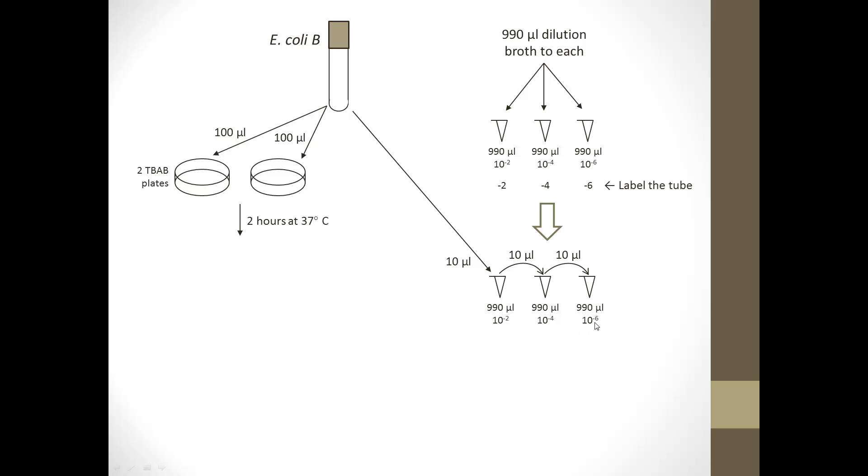Now that we have a mil of 1 to 1 million diluted cells, we'll get two more TBAB plates. Label them. Make sure you label the bottom of the plates. Label them E. coli B diluted 10 to the negative 6th. You can label it A and B or 1 and 2 because there are two of them. To each of them, you'll add 100 microliters of this sample. Then spread them correctly as per the procedure of how to spread a plate. These will be incubated overnight at 37 degrees so that you can count colonies. You can then use the concentration of the number of colonies to determine the concentration in this tube to work back and get the concentration in this tube.